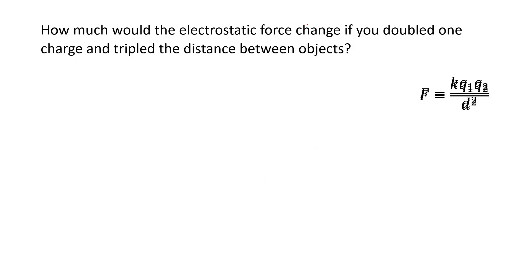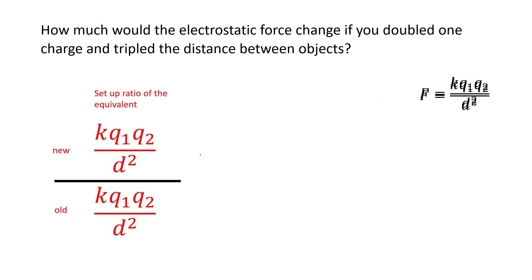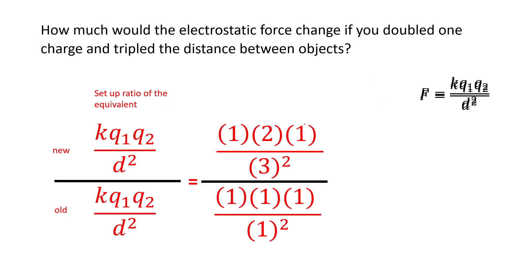How much would the electrostatic force change if you double one charge and triple the distance between the objects? You would set up an equivalent — take the original formula, double the charge of one object, triple the distance — and you get 0.222 times the original force.